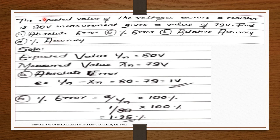The first problem: the expected value of the voltage across a resistor is 80 volts; measurement gives a value of 79 volts. So we are expecting 80 volts and it gives 79 volts. We have to find the absolute error, percentage error, relative accuracy, and percentage accuracy. This is Unit 3 where we discussed errors, accuracy, and related things.